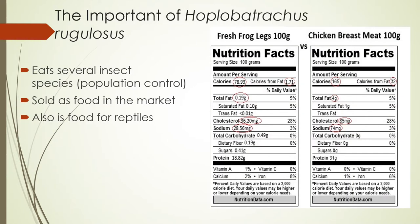In this slide we can see the importance of Hoplobatrachus rugulosus. First, it eats several insect species, so it acts as population control in its ecosystem. It is also sold as food in the supermarket and can be food for reptiles like snakes or crocodiles. Looking at the nutrition of 100 grams of frog legs versus 100 grams of chicken breast, frog legs are lower in calories, total fat, and cholesterol, so it is actually healthier than chicken breast.